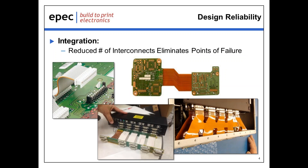Going back to design reliability: mechanically, flex and rigid flex technology also have substantially tighter bend capabilities than equivalent cable assemblies. This is due to their significantly thinner constructions, which allows a specific bend requirement to be achieved with far less stress on the parts and ultimately a higher level of reliability. The last area of design reliability improvement is shock and vibe performance. Flex and rigid flex interconnects are significantly lighter than other methods — this reduction in weight translates directly to an improvement in shock and vibe performance, which is a very important factor in handheld devices subjected to a drop test, for example.